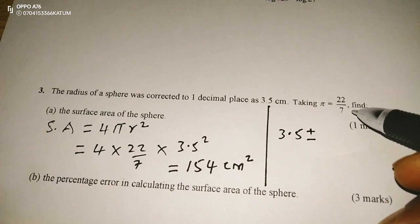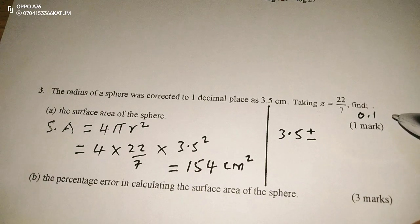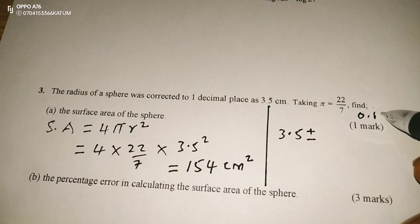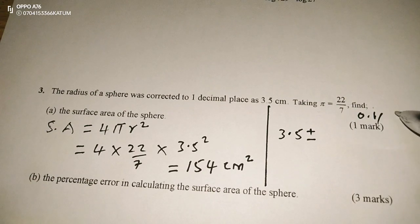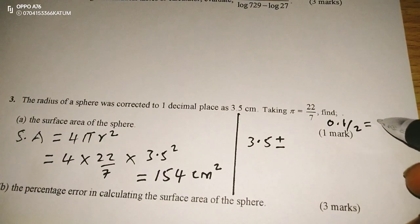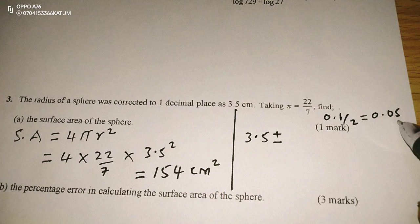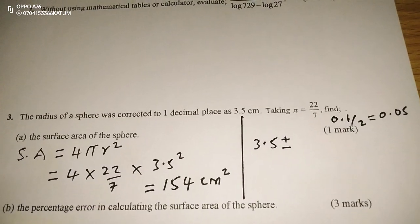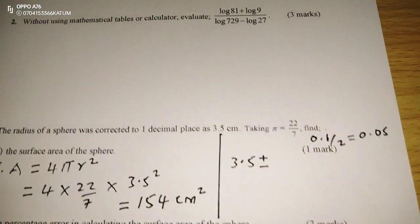And the absolute error in the recording is 0.1. So when we divide the absolute error, the accuracy is 1 decimal place, which means 0.1 divided by 2 gives us the absolute error in the recording of this radius, which is 0.05. So when we add or subtract the absolute error in the recording of any dimension, that gives us the limits within which the recording was done.